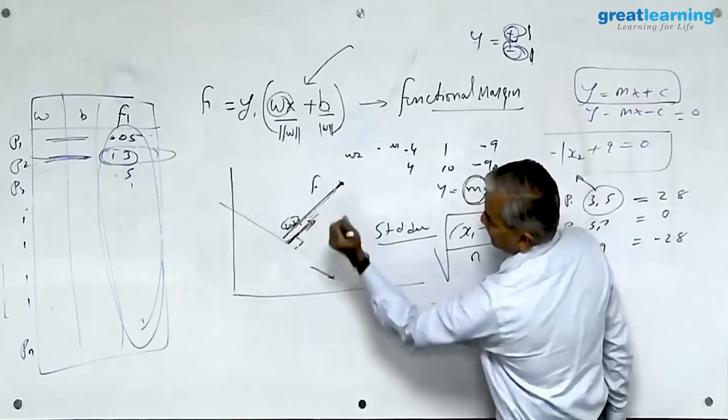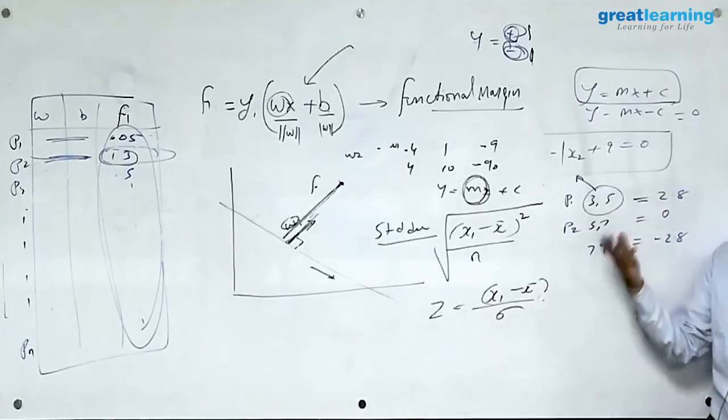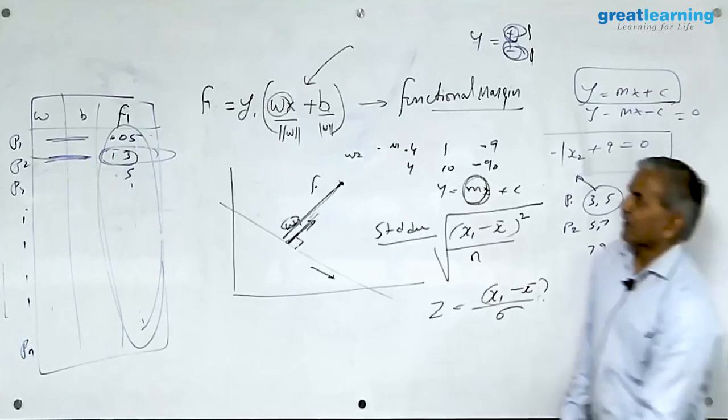So x_i minus x̄ divided by w, you are scaling it, you are converting into form of scaled data set, nothing else. With this equation I promise we will not go beyond this.